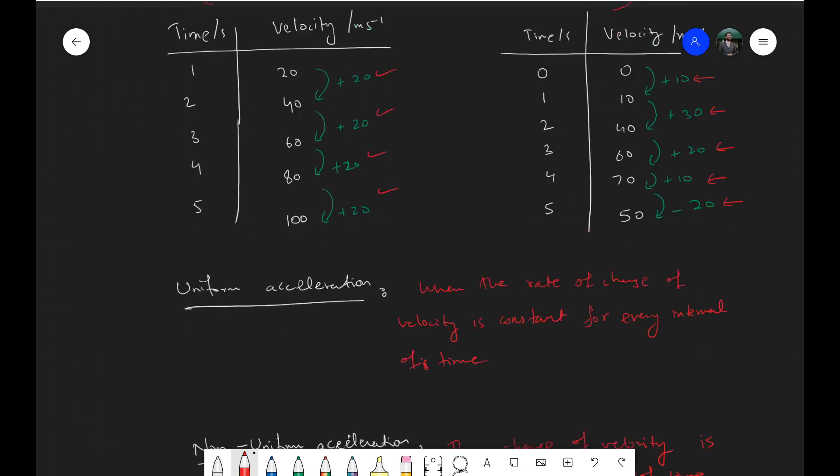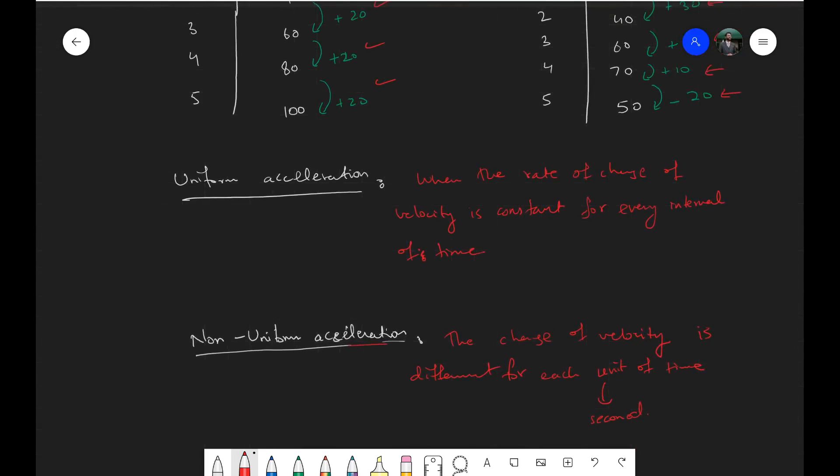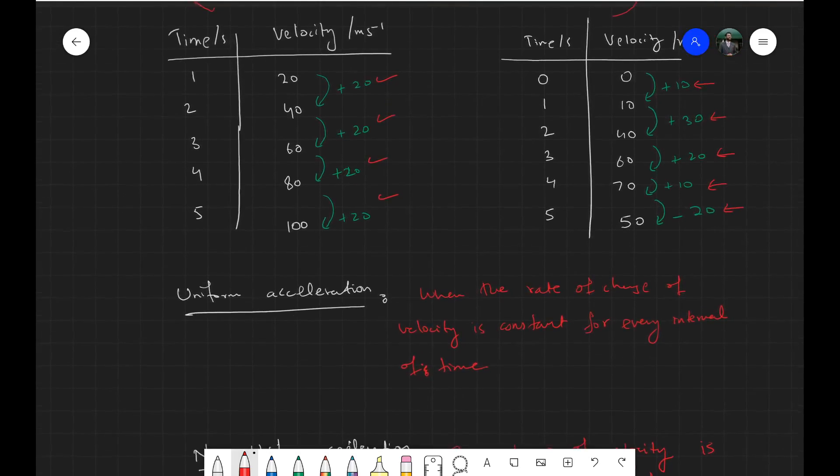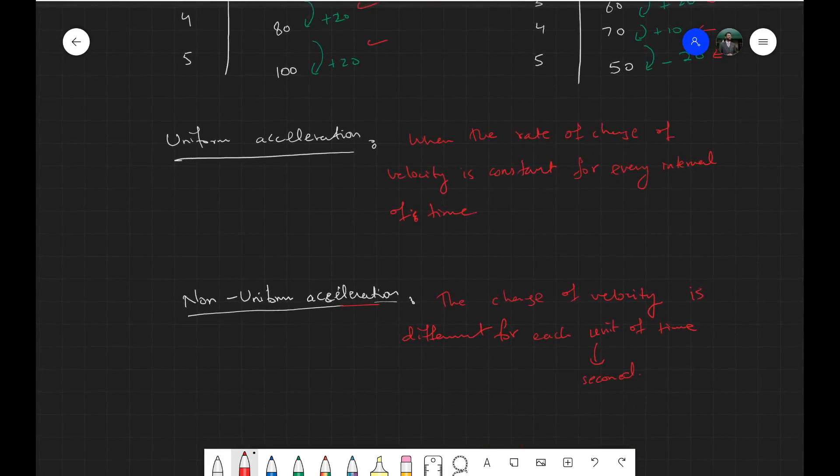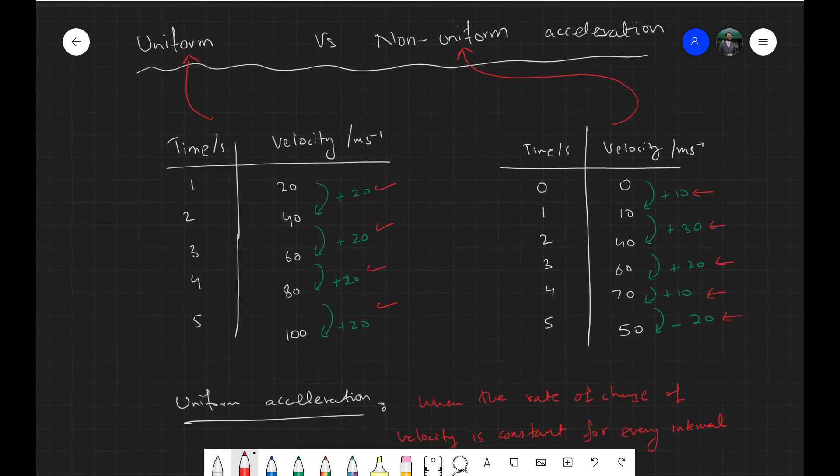So the acceleration is different for every single interval of time given in the table. So this one, the second table, is an example of non-uniform acceleration.